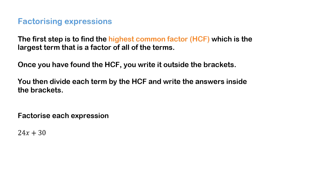In this video we'll be covering factorizing expressions. The first step is to find what we call the highest common factor, which is the largest term that is a factor of all the terms. Once you have found the highest common factor, you write it outside the brackets. To find what goes in the brackets, you divide each term by the highest common factor, and these solutions are what go in the brackets.